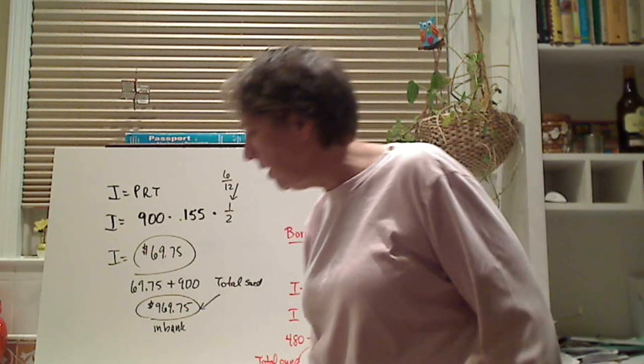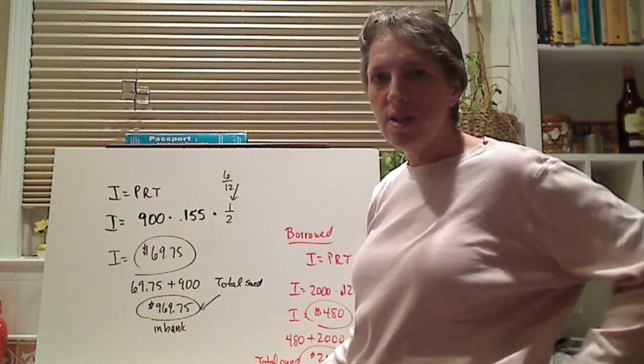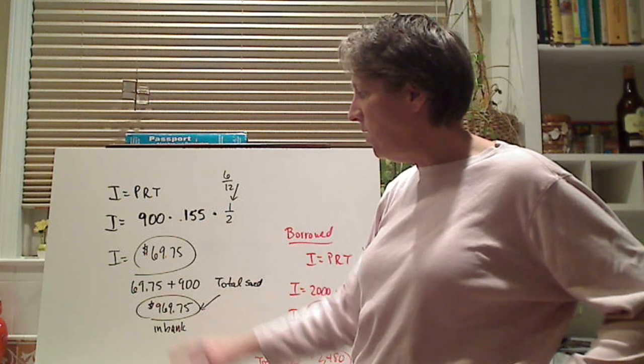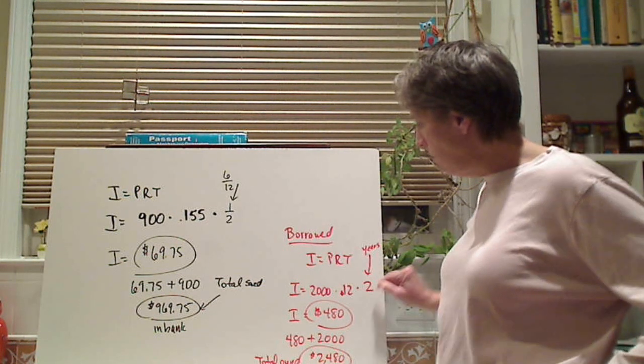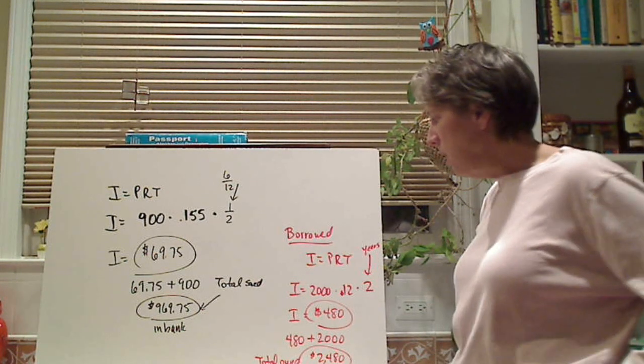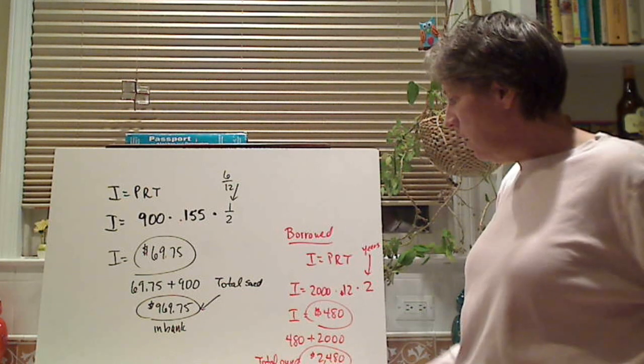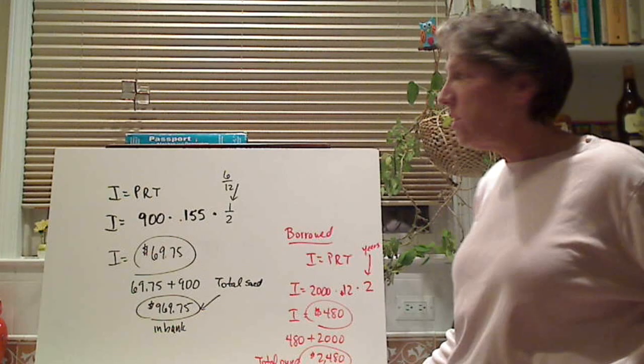You can pause the video and check it. You should have had on the first one, $69.75 is the interest. A total amount that's in the bank is $969.75. On this one, you borrow, remember, 2 years? You just put in a 2. You don't have a fraction. The interest was $480 that you have to pay back, and you owe $2,480 now.